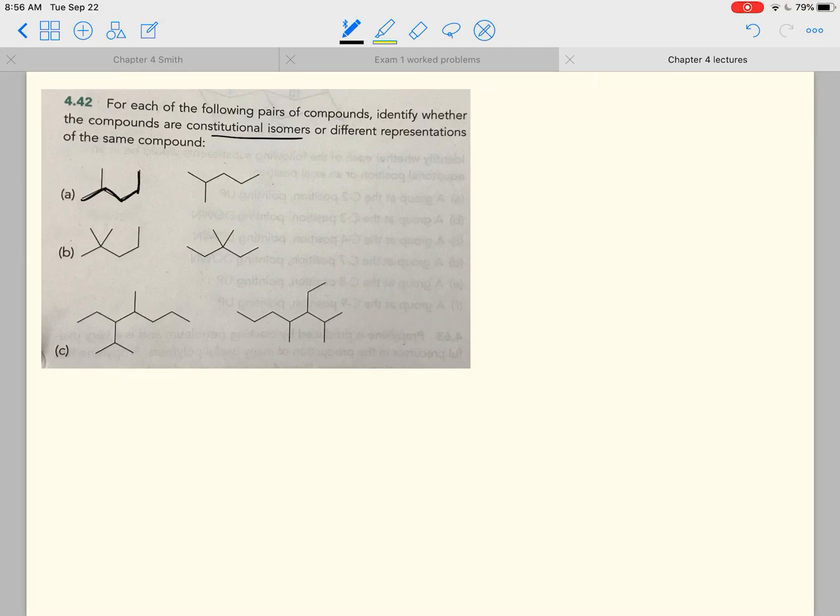So in this structure here, we have one, two, three, four, five carbons in the longest chain. So we would call that 2-methylpentane.